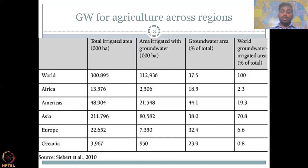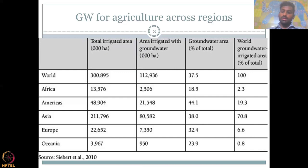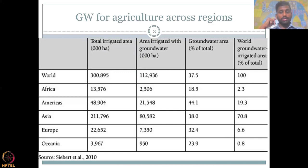In the Americas — North and South America — above the world average of 37.5%, we have 44% of the total irrigated area under groundwater irrigation, nearing 50%. If you look at what they grow, it is mostly nuts, horticulture — fruits, orchards, etc. A lot of water is also used for grass to feed the meat market, livestock, and other things, and then they export the meat. Compared to the world, the Americas account for almost 20% of the groundwater irrigated area.